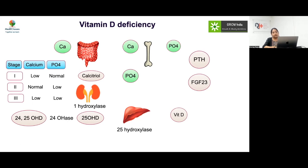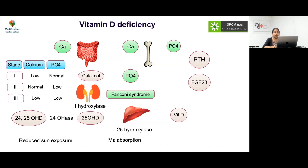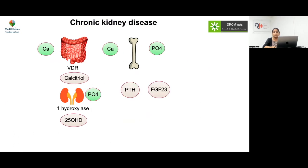In long-standing vitamin D deficiency, secondary hyperparathyroidism produces features of Fanconi syndrome — a generalized tubular dysfunction causing urinary phosphate loss. Causes of vitamin D deficiency include reduced sun exposure, malabsorption, and obesity, which causes sequestration of vitamin D in adipose tissue. Fanconi syndrome is important to identify because patients may have wild metaphyseal changes; don't confuse long-standing vitamin D deficiency with wild epiphyseal changes.